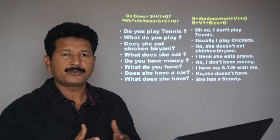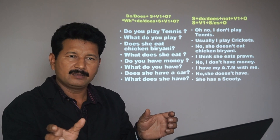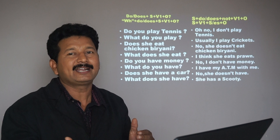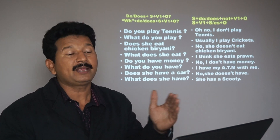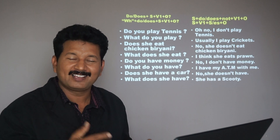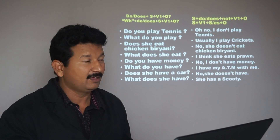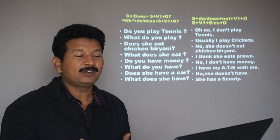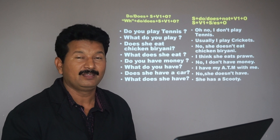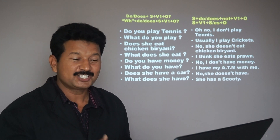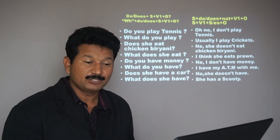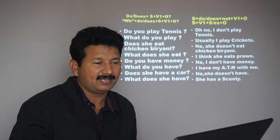Here is a successful technique: begin with a Yes/No question, then practice the negative sentence, then a WH question, then a positive sentence — and if possible, a negative question too. For example: Do you play tennis? No, I don't play tennis. What do you play? Usually I play cricket. Or: Does she eat chicken biryani? No, she doesn't. What does she eat? I think she eats prawn. Do you have money? No, I don't. What do you have? I have my ATM card. Does she have a car? No, she doesn't. What does she have? I think she has a scooter.